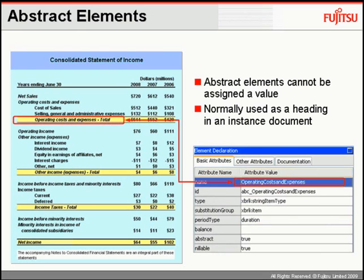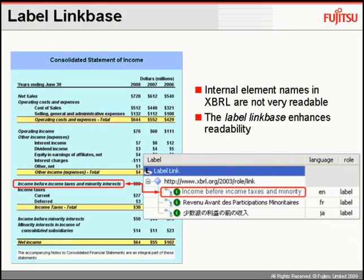In this example, the operating costs and expenses is simply a heading in the income statement — it's not an actual value. So what we do there is we create it as what we term an abstract value in the taxonomy.